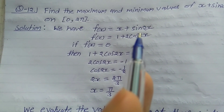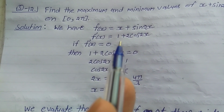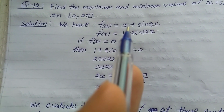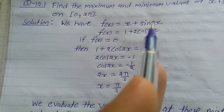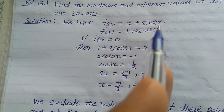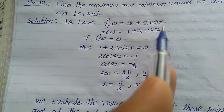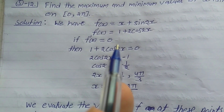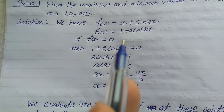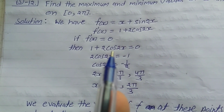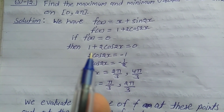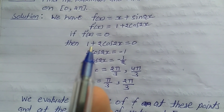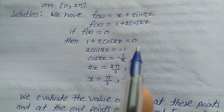Differentiate with respect to x, so f'(x) = 1 + 2cos(2x), because the derivative of x is 1, the derivative of sin(2x) is cos(2x), and the derivative of 2x is 2. Set f'(x) = 0 to find the x values for the maximum and minimum values, so 1 + 2cos(2x) = 0.